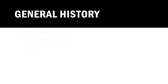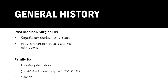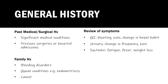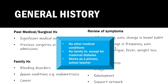You move on to a general history, asking Amy about other medical conditions, current medications, any surgery or hospital admissions. You ask about family history, specifically bleeding disorders, gynaecological conditions such as endometriosis, and any cancers — particularly bowel or gynae cancers. A brief review of symptoms covers GI complaints, urinary symptoms, and alarming systemic symptoms such as fatigue, fever, or weight loss. Finally, you take a social history covering smoking, recreational drugs, alcohol, employment, and home support. Amy reports no medical conditions or medications, no relevant family history except her mother has diabetes, and she is working as a primary school teacher, living at home happily.